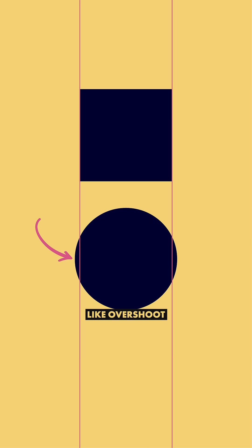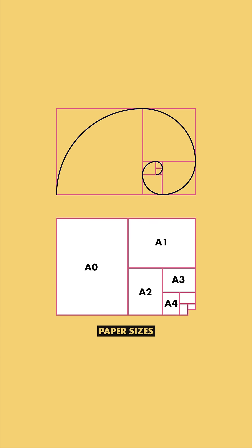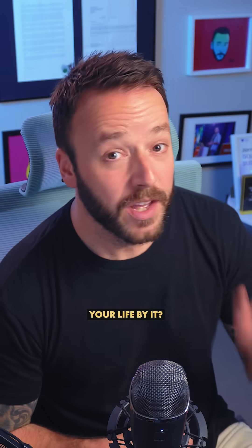This is not a one-size-fits-all method. It doesn't account for all the quirks and nuances of being a designer — things like overshoot, a bisection illusion, common screen aspect ratios, or paper sizes. Is it a good rule of thumb?